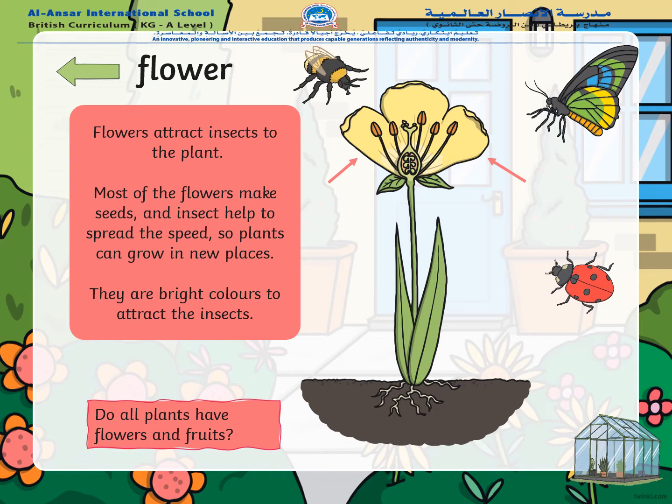The next part is flower. Flowers attract insects to the plant. Most of the flowers make seeds, and insects help them to spread these seeds so plants can grow in new places. They have bright colors to attract insects, because when insects come they will carry the seeds to different plants, helping the plants to grow in different places. Do all plants have flowers and fruits? Think for a moment.